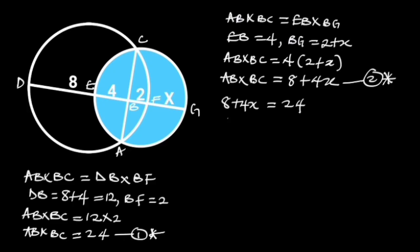Collecting the like terms will give us 4x is equal to 24 minus 8. 24 minus 8 is equal to 16, and we are left with 4x is equal to 16.